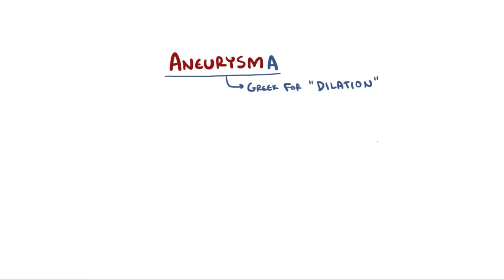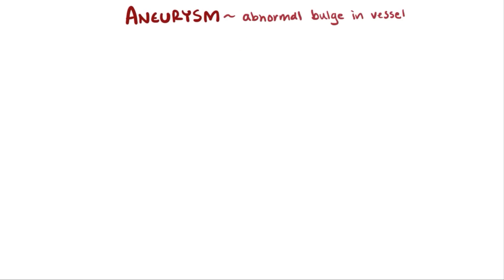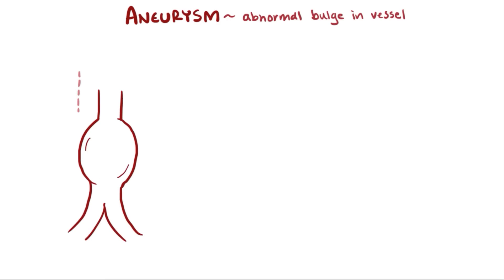The word aneurysm is based off the Greek word aneurysma, which means dilation, and that makes sense because aneurysms are abnormal dilations in a blood vessel. We officially label a bulge in a blood vessel as an aneurysm when the diameter of that bulge is about one and a half times larger than the normal diameter of a blood vessel.